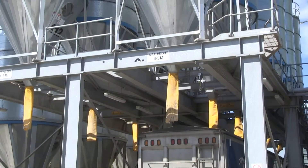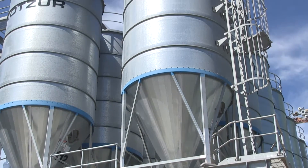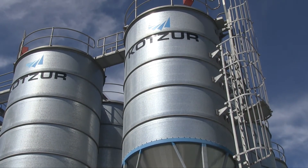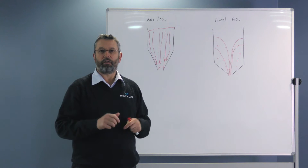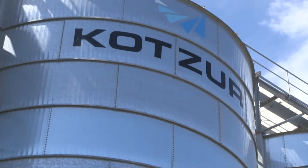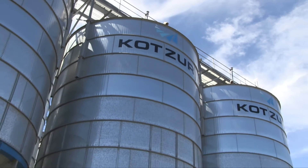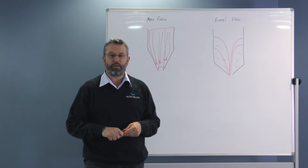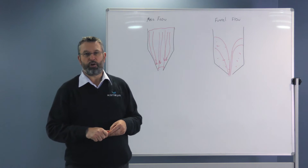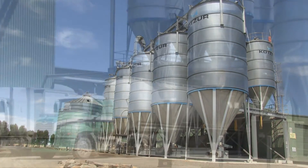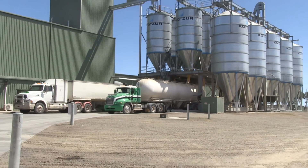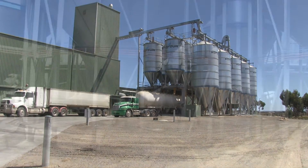It's our belief here at Kotzer that fitting those types of devices is really only trying to solve an issue with a bin which has been poorly designed in the first place. Our goal is to design the silo correctly in the first instance so we don't need to add these flow aids later. To ensure a silo design will reliably discharge, the first thing we need to do is understand the material's properties — there are a range of properties used to calculate the bin geometry, hopper surface material, and outlet design.